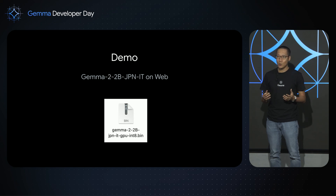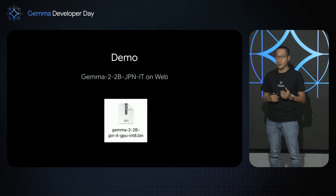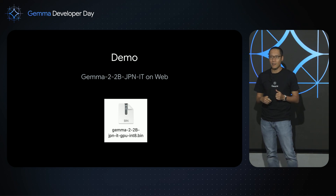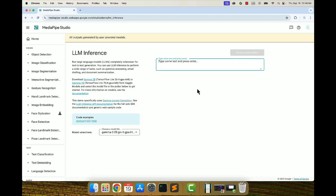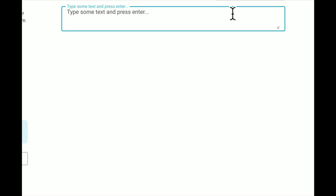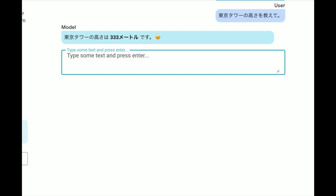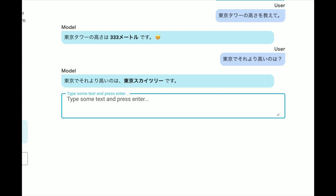Because we announced a Gemma model fine-tuned for Japanese earlier today, I took that model checkpoint and converted it into the on-device format for use with MediaPipe. Let's check the Japanese skill of our Gemma model running on-web with MediaPipe Studio. I'll start by asking a few questions in Japanese — what is the height of Tokyo Tower? The answer is 333 meters. What about something in Tokyo that's taller than Tokyo Tower? Gemma's answer is Tokyo Skytree, which is the correct answer.